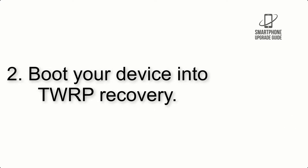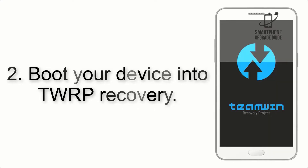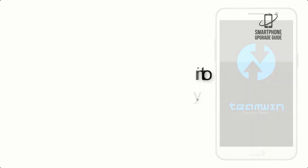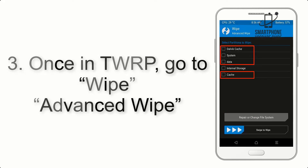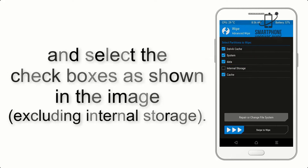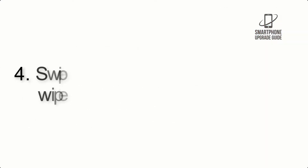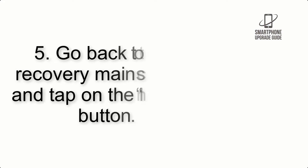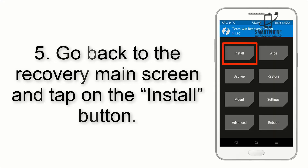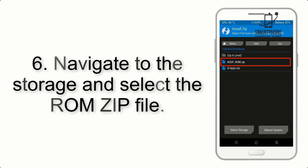Step 3: Boot your device into TWRP recovery. Once in TWRP, click on Wipe, then Advanced Wipe, and select the checkboxes as shown in the image, excluding internal storage. Step 4: Swipe the button to wipe the device.